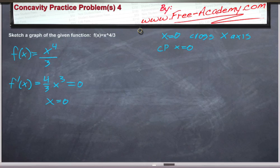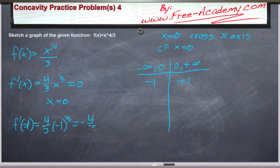We take our critical points and we set up a table to determine where we're increasing and where we're decreasing. And we take some test values, say negative 1 and positive 1, and we put them into our first derivative. So f prime of negative 1 is equal to 4/3 times negative 1 to the 3rd power, which is equal to negative 4/3. So we're negative, which means we're decreasing.